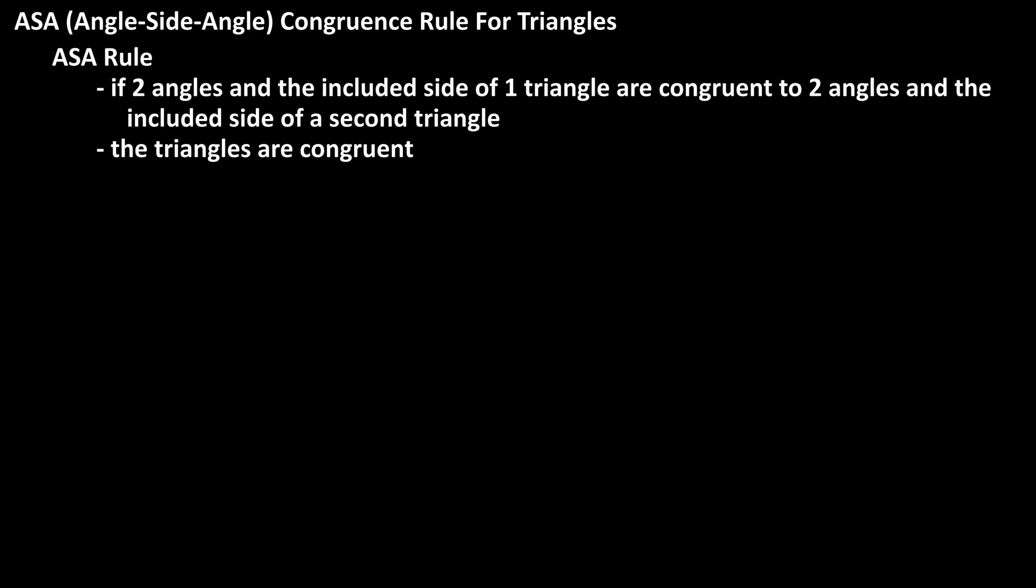The ASA, or Angle-Side-Angle congruence rule for triangles, states that if two angles and the included side of one triangle are congruent to two angles and the included side of a second triangle, then the triangles are congruent.